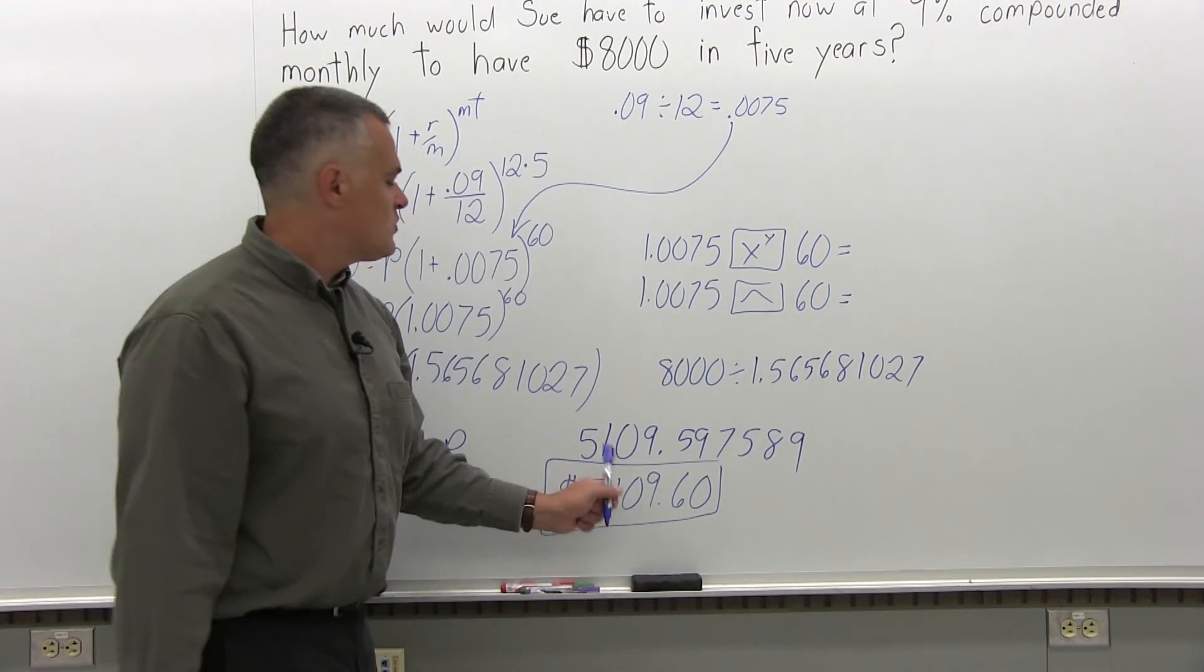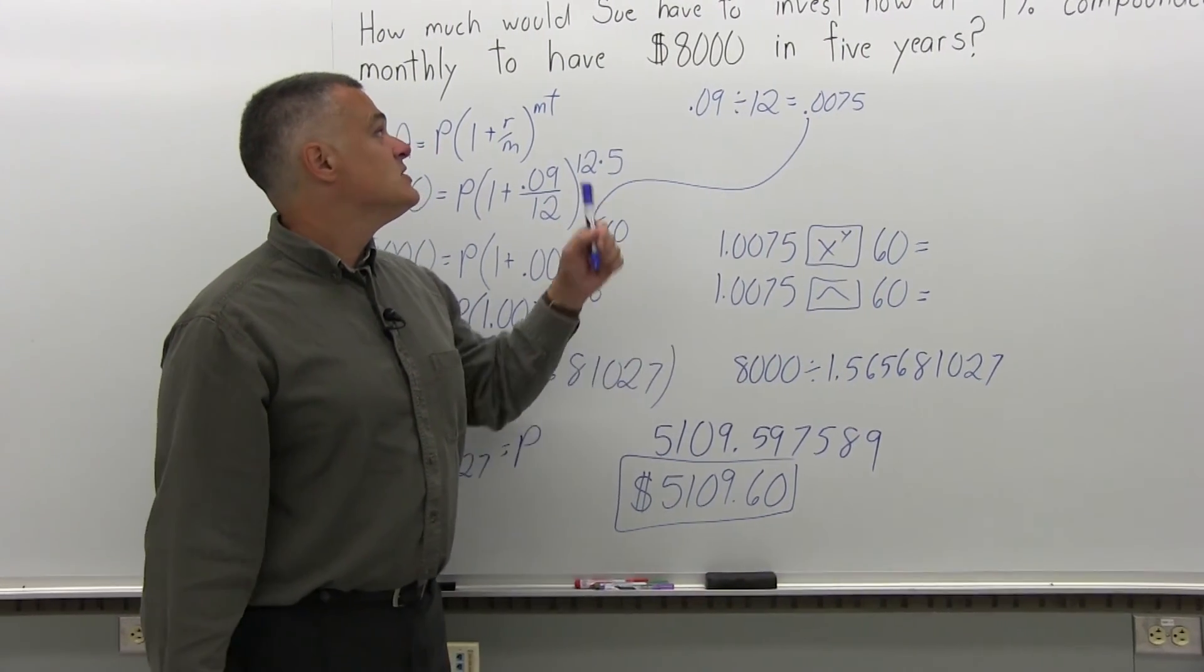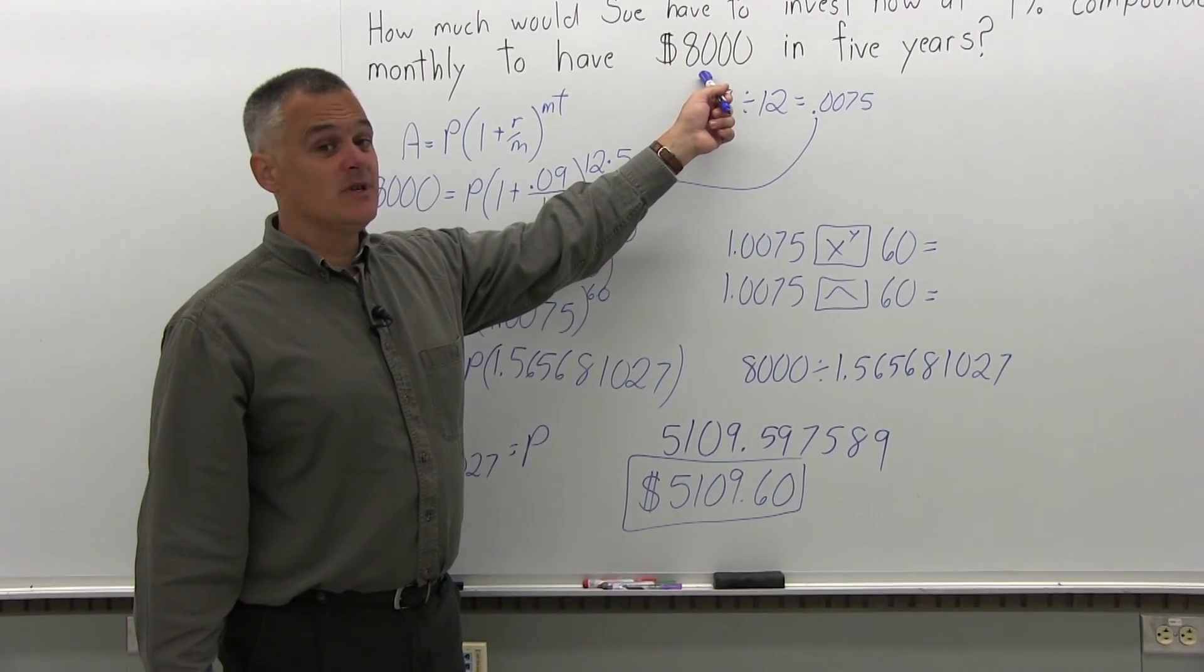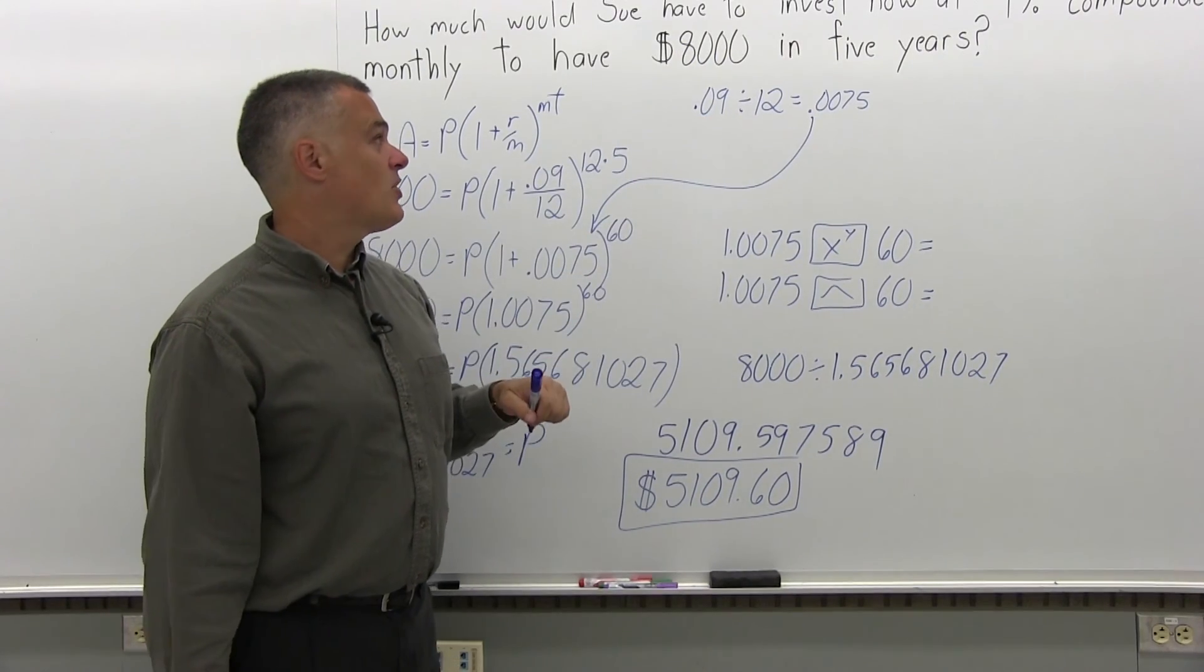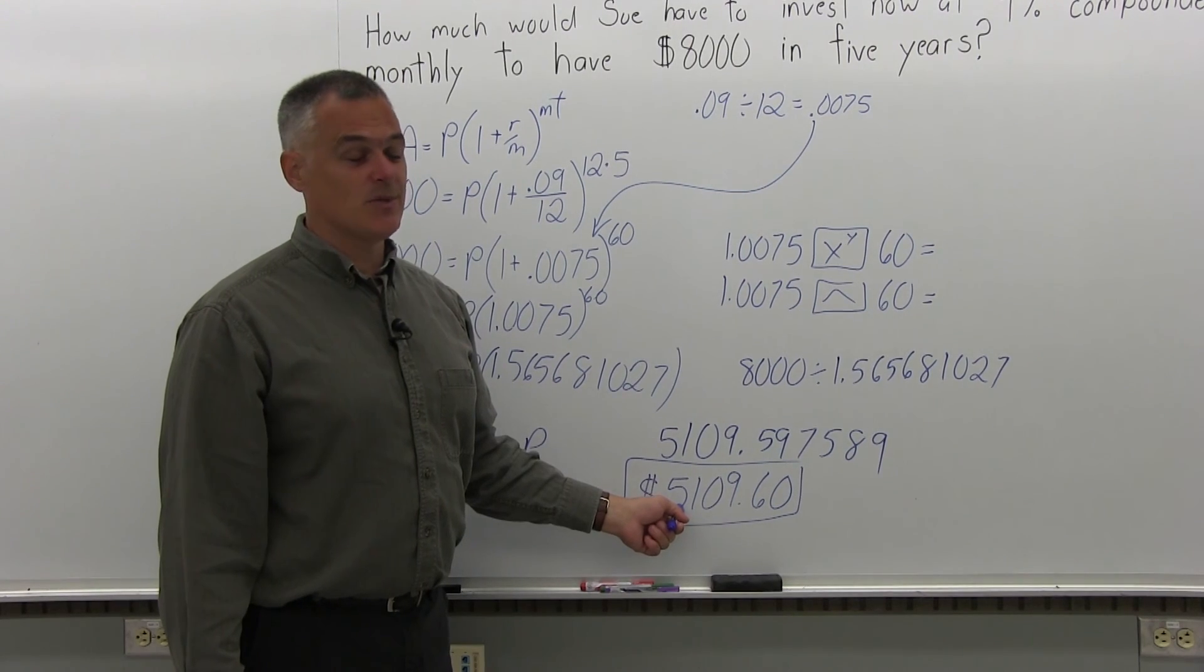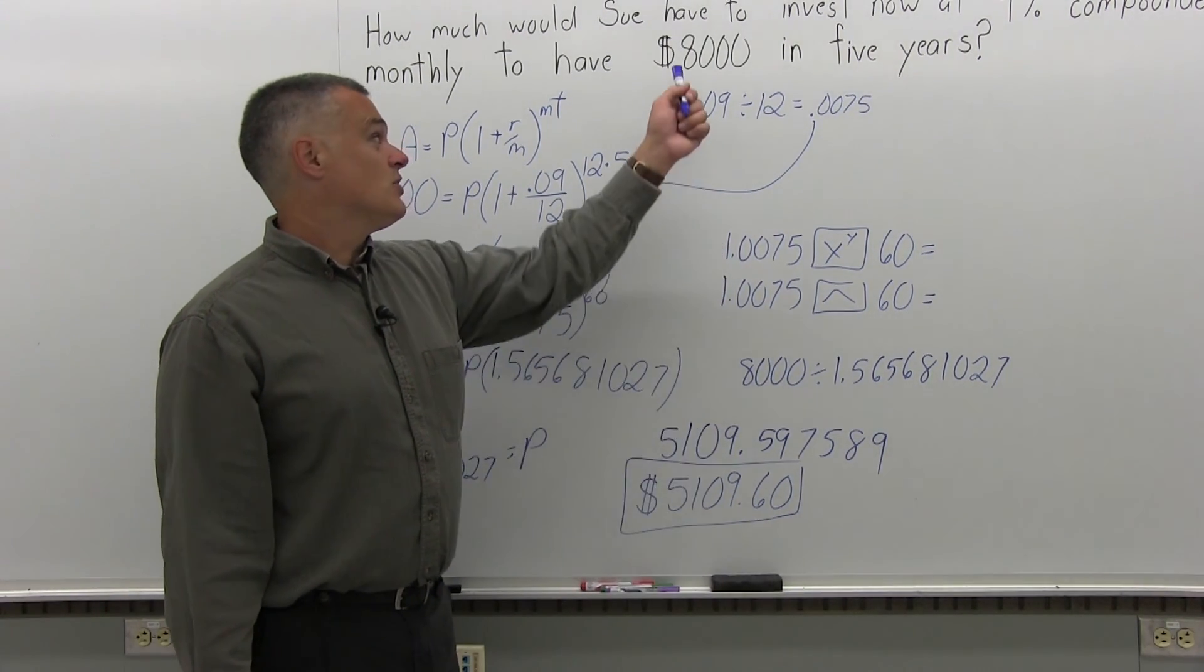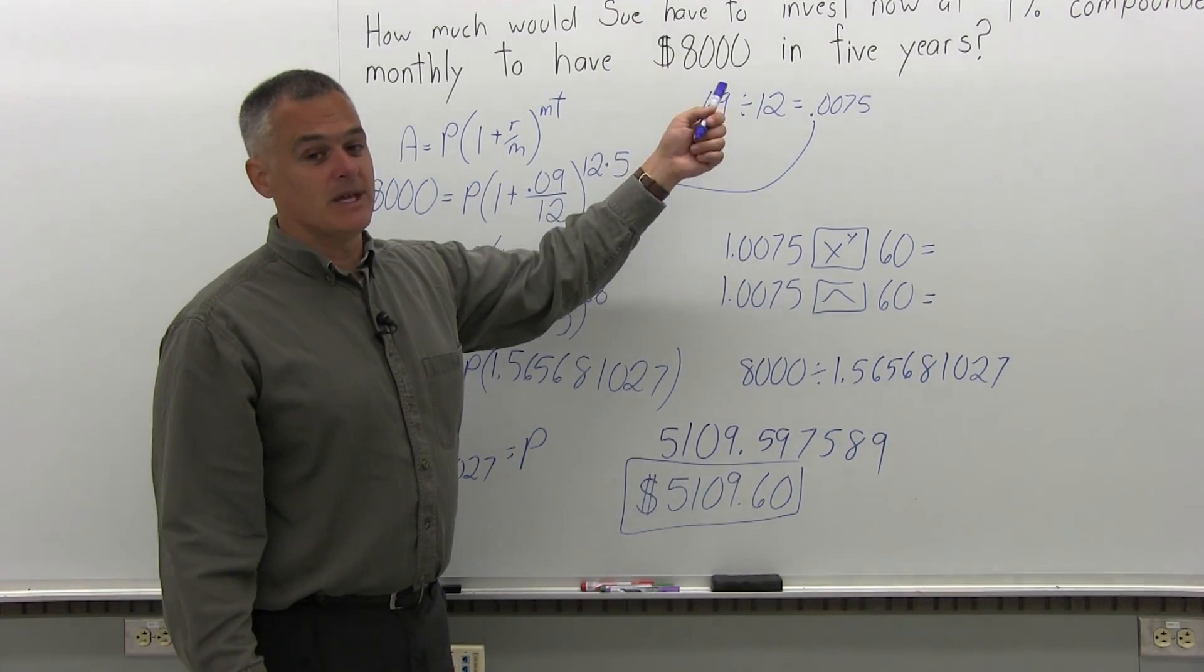So if Sue invests $5,109.60 now at 9% compounded monthly, she's going to have the $8,000 in five years. Now, if you remember from the previous problem, if it was simple interest and not compounded, it was a little over $5,500. So because it's compounded, you need less money to reach your goal of 8,000. The compounding helps.